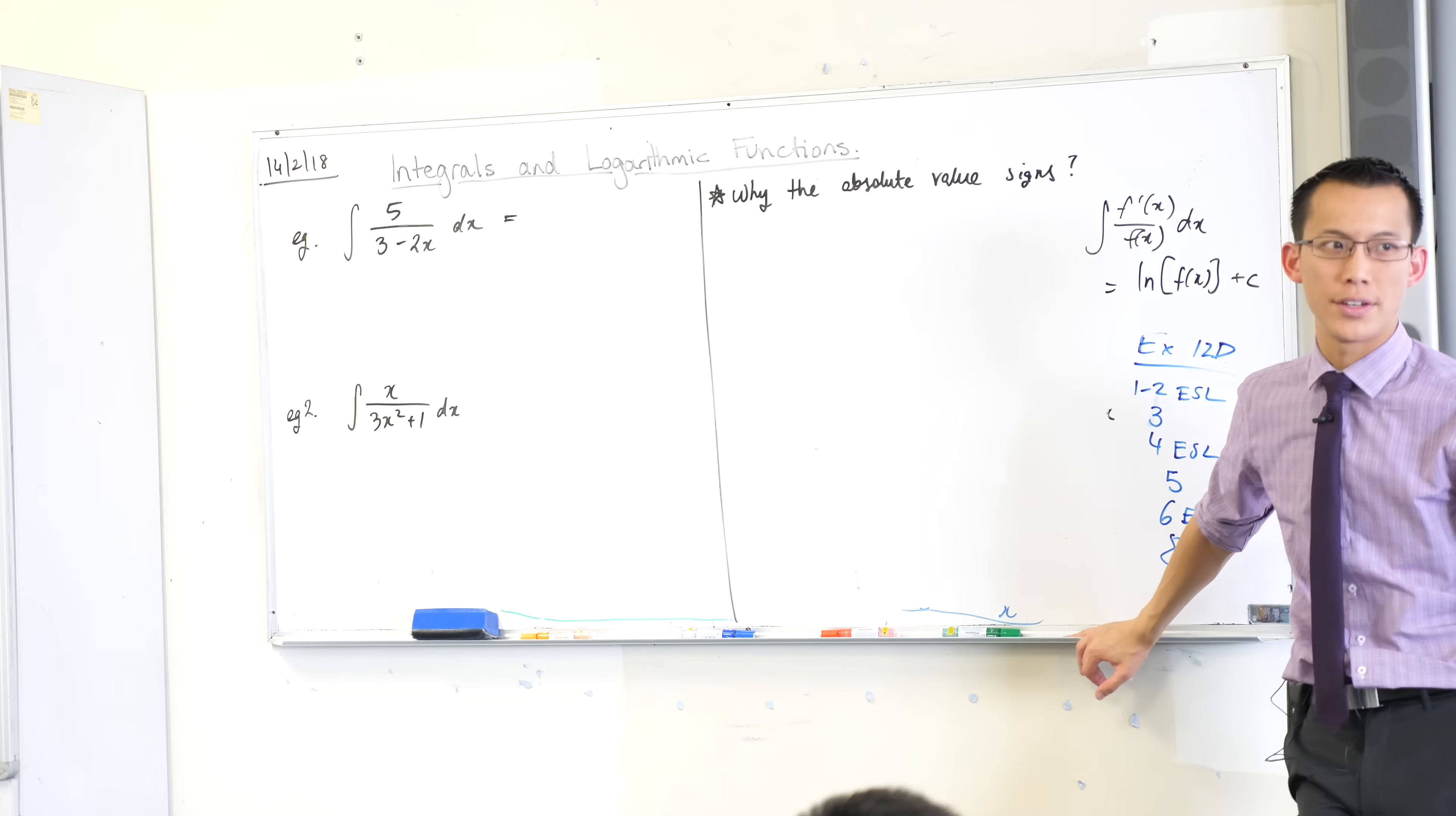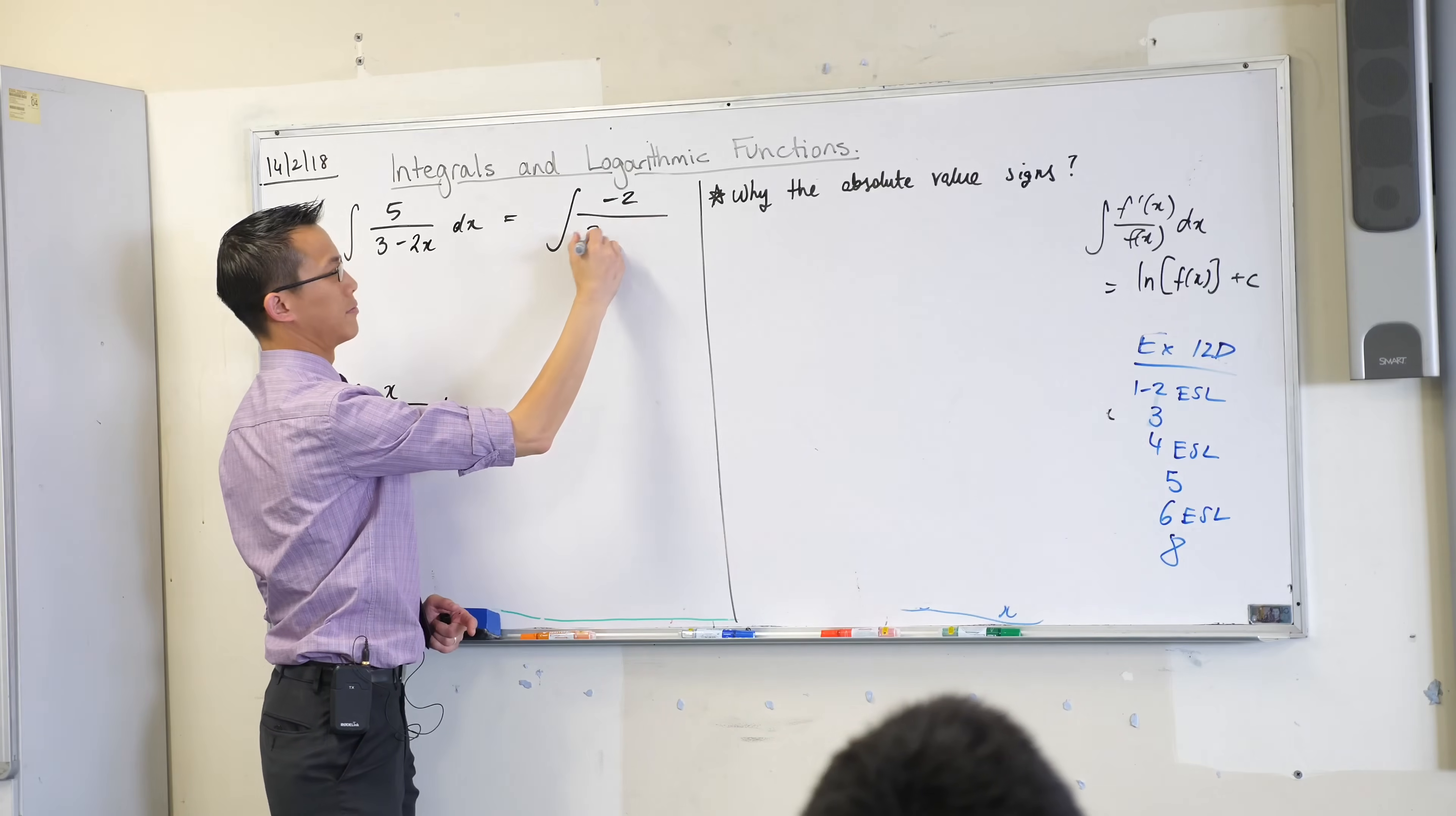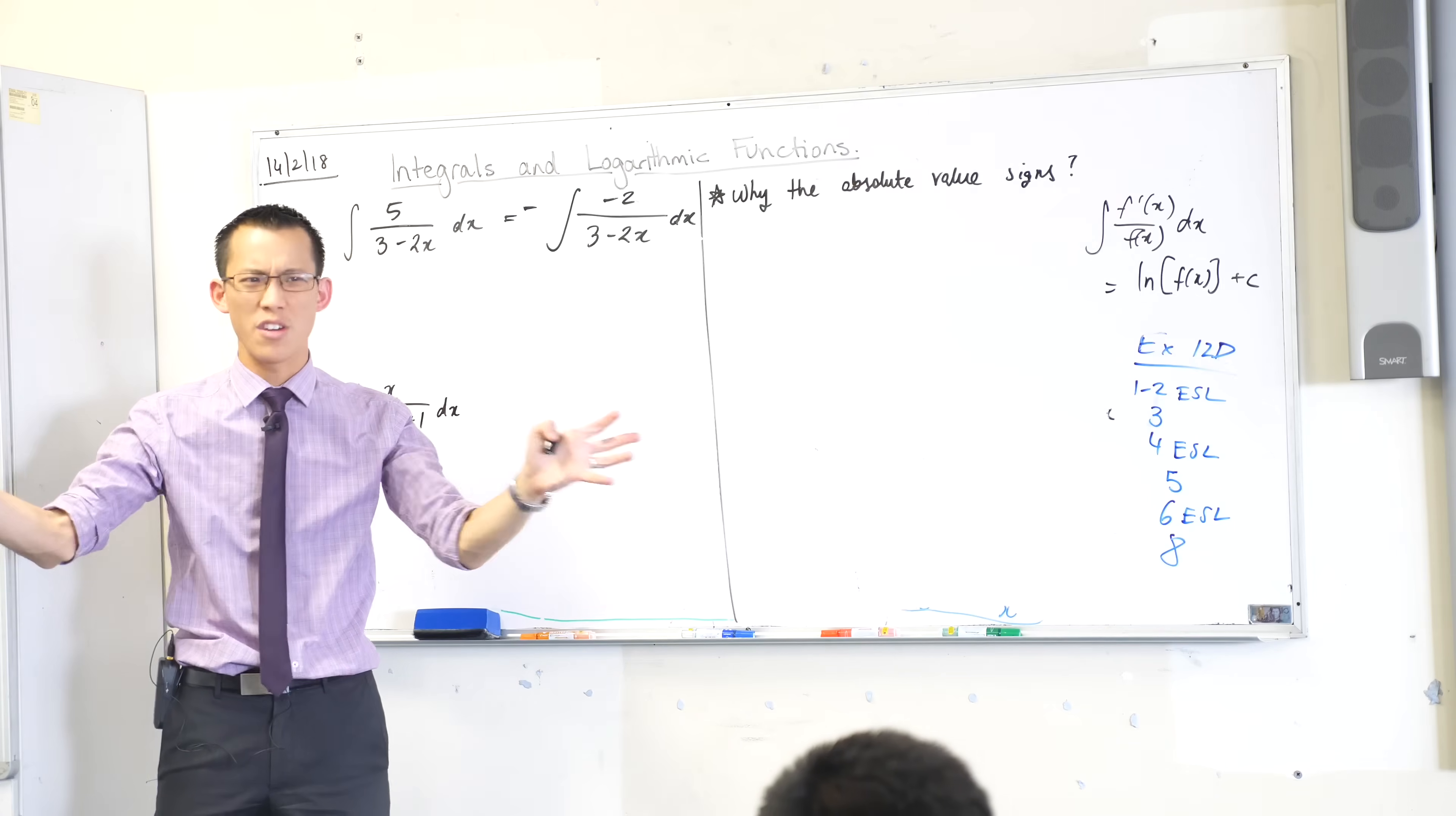In this case what is the derivative of the denominator? Negative two. The top is not negative two, but I can make it negative two if I introduce the constant out the front. Watch what happens. I'm going to go ahead and make it what I want it to be, negative two. But in order to compensate for that I need to multiply by something that turns this five into the negative two, or turns the negative two into the five. Same deal. So what would I need? Well there's a minus sign that I introduced, so I'm going to put a minus sign out the front to balance them. We know they'll cancel.